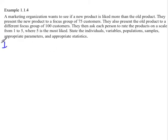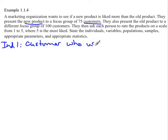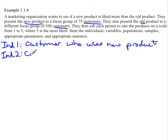Starting with individual one: as I read through this, I see they're talking about the new product and customers, so individual one is a customer who uses the new product. Individual two — looking at the old product — would be a customer who uses the old product. I usually consider individuals as singular, and then when you put them together you get the plural in the populations.